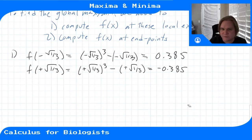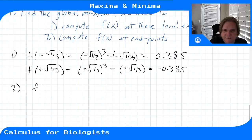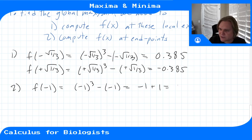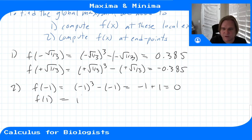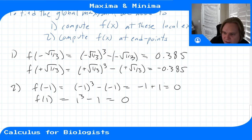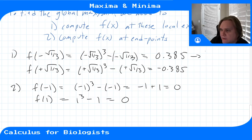Now checking the endpoints: f(-1) = (-1)³ - (-1) = -1 + 1 = 0. And f(1) = 1³ - 1 = 0. Both endpoints give a function value of zero.